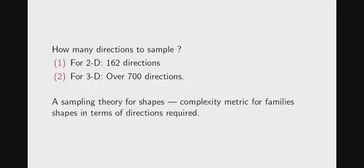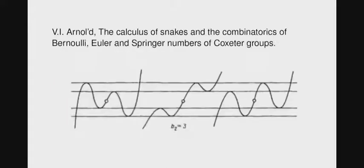They're injective if you take all directions. There's a very simple and interesting question, both theoretically and practically, which is how many directions do you want? Empirically, when we were playing around with 2D shapes, we took 162. And 3D, we used over 700. One can ask more theoretically, why these numbers?